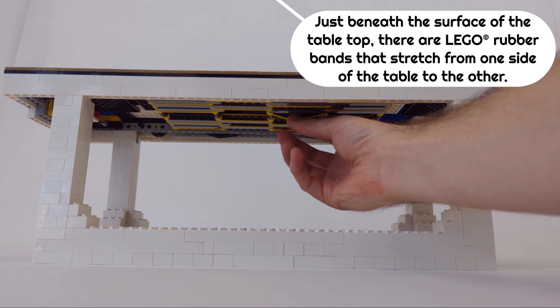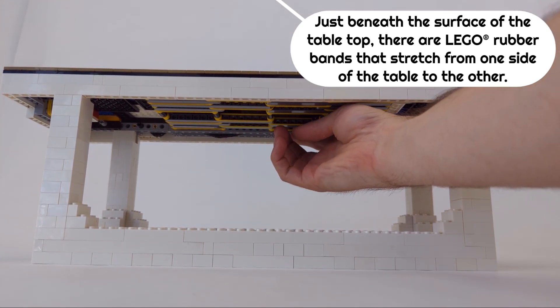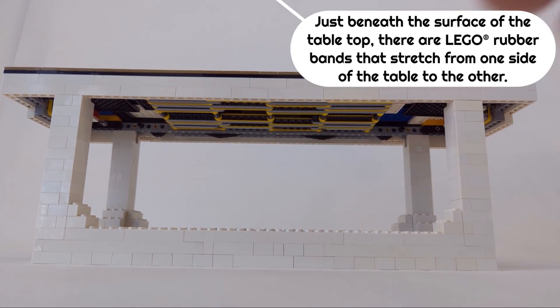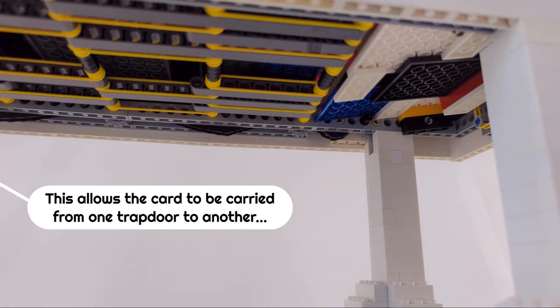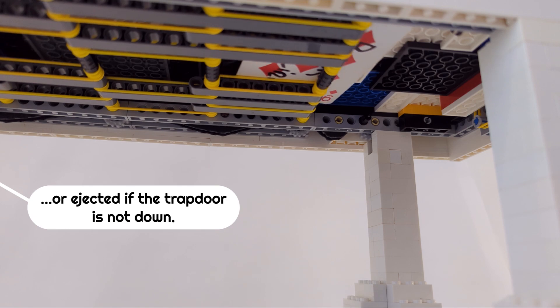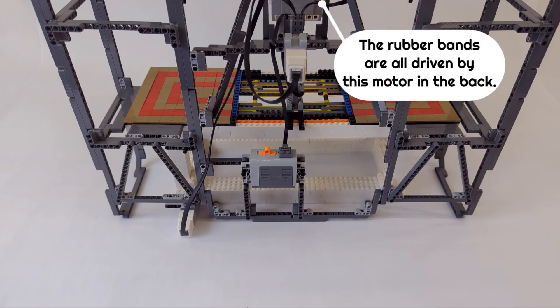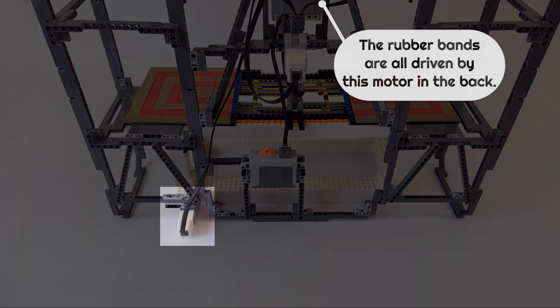Just beneath the surface of the table top, there are Lego rubber bands that stretch from one side of the table to the other. This allows the card to be carried from one trap door to another, or ejected if the trap door is not down. The rubber bands are all driven by this motor in the back.